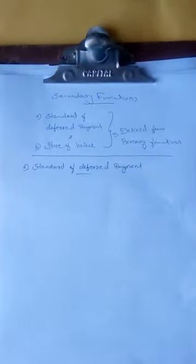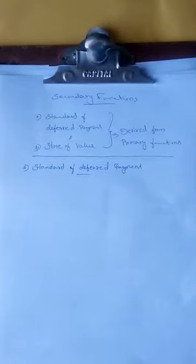Let us discuss standard of deferred payments function of money. With the help of money, future payment became easy. Money has certain qualities such as general acceptability, stability, and durability, so we can borrow money and repay money in future. Debts are usually expressed in terms of money. In such a way, money connects the value of today with those of the future.